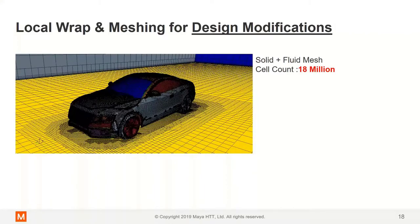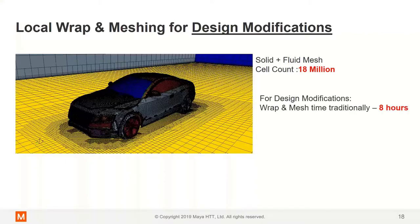Local meshing speeds up the re-execution of the surface remesher after local changes are made to the input geometry or the mesh settings. With this feature, STAR-CCM+ only remeshes surfaces defined within a defined location and leaves other surfaces unchanged. We have a total mesh count of 18 million, and traditionally this would take seven to eight hours to mesh both the solid and the fluid domain. We can cut this down to two hours by using the feature of local wrap and remesh in STAR-CCM+.